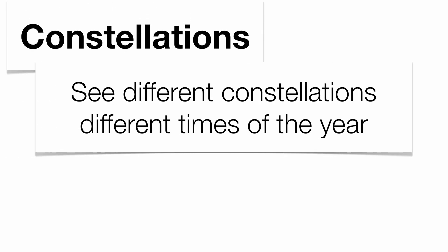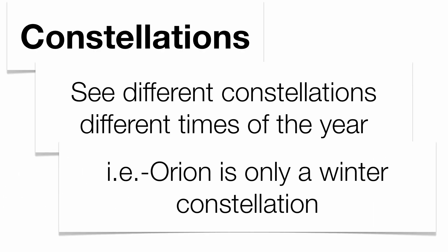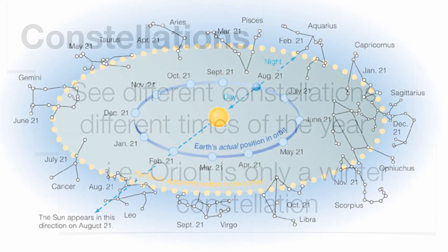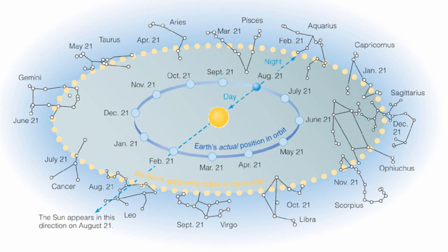An idea that supports the fact that we revolve is that we sometimes see certain constellations at different times of the year. The Big Dipper and Little Dipper are pretty close to Polaris, so we'll see them throughout the entire year, 365 days. But certain constellations like Orion are only seasonal. For the most part, you see Orion during the wintertime, because the sun gets in the way of our viewpoint of a lot of constellations. So certain constellations are seasonal, which gives some evidence that we do move around the sun.